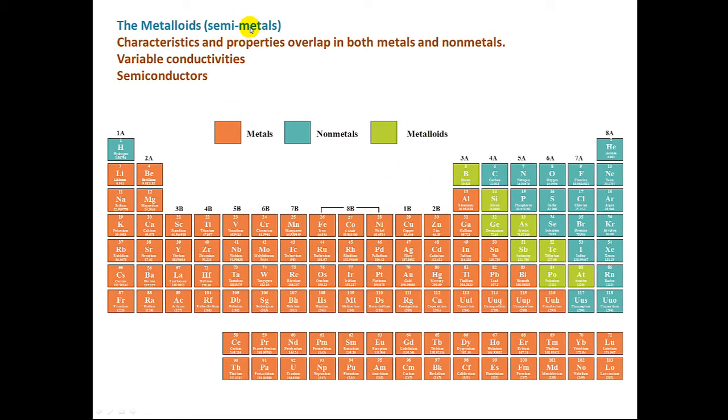The metalloids, or semi-metals, are colored in green. Those include boron, silicon, germanium, arsenic, antimony, tellurium, polonium, and astatine. These semi-metals, or metalloids, have characteristics and properties that overlap in both metals and nonmetals. They have variable conductivities, and some of these are used as semiconductors. Silicon is a good example of a semiconductor that you might be familiar with.